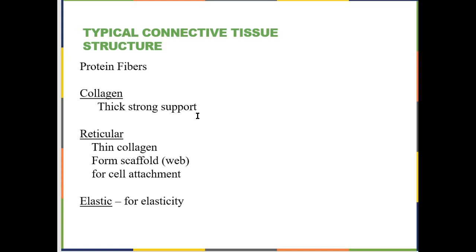In the extracellular matrix — ground substance plus protein fibers — there are three major protein fibers. Collagen fibers are thick and strong and provide support, making connective tissues tough. Collagen is a protein woven into big thick fibers made of millions of collagen molecules glued together. Reticular fibers are also manufactured from collagen but are thinner, forming a scaffolding or cargo net for cells to attach to. Elastic fibers provide elasticity and are composed of a protein called elastin.